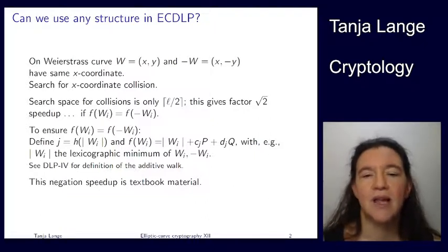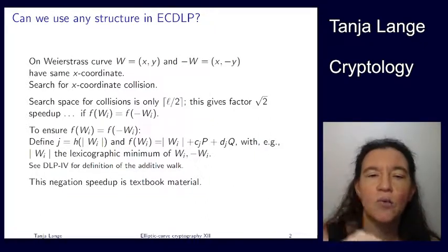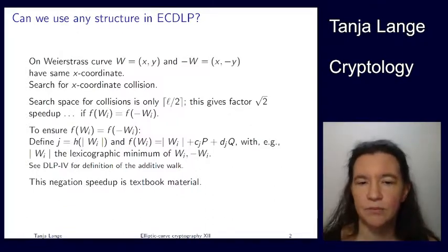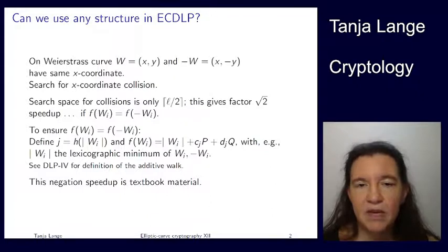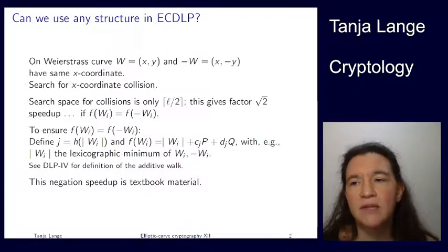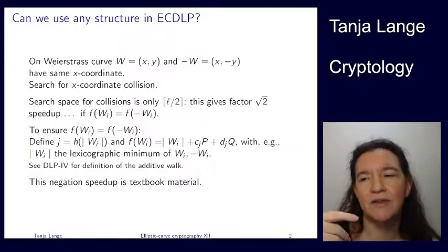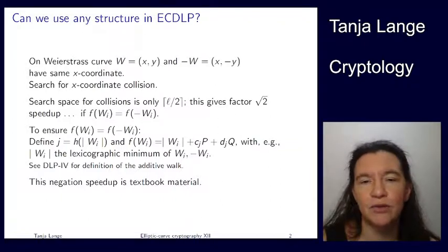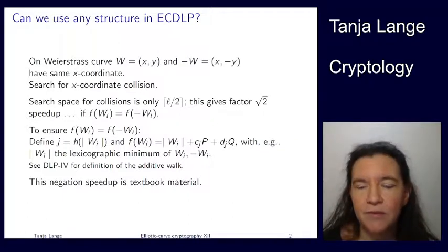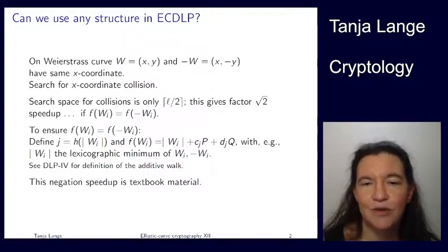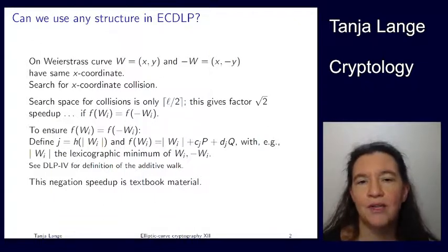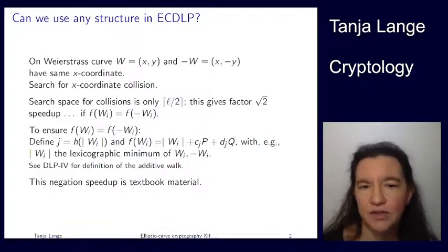So this speedup, so that you're getting a factor of square root of 2, is basically textbook material. This means if you want to have 2 to the 128 for the attacker, you would basically have to go to 257, except for there's all these fudge factors like the pi over 2. So it's not exactly those numbers anyway. But you're getting a bit of a speedup from this. So that's half, well, it's a square root of 2. So kind of half a bit on the cost of the attack or one bit on the size of the group.